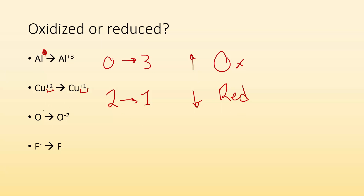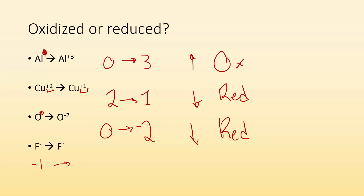Oxygen here — no charge given, so you assume it's zero. It goes from zero to minus two. The charge went down, which tells me it's reduction. Here I have a fluoride ion — it started off as minus one, and there's no charge on the product, so it must be zero. From negative one to zero, that's oxidation — it becomes less negative or more positive.